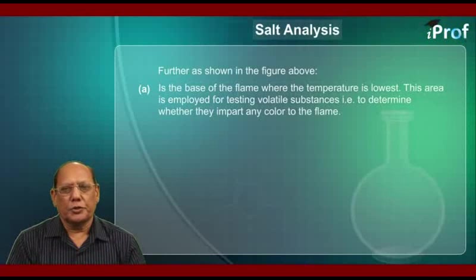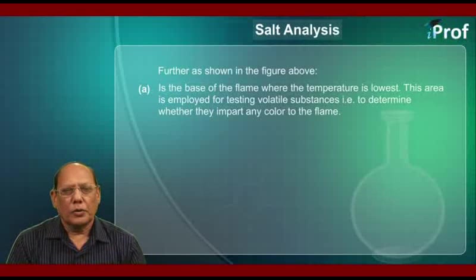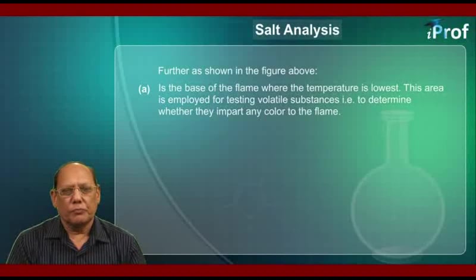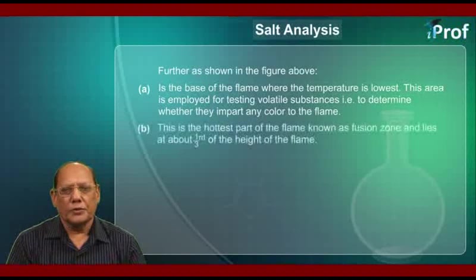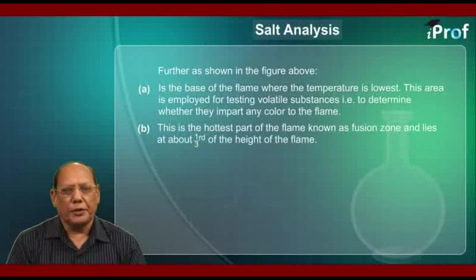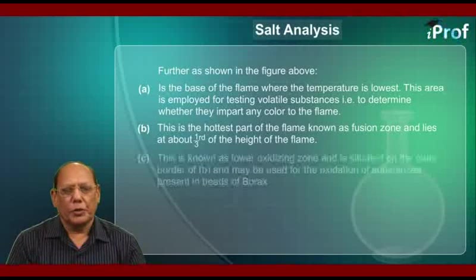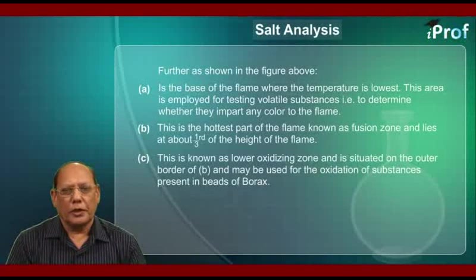As shown in the figure above, A is the base of the flame where the temperature is lowest. This area is employed for testing volatile substances — that is, to determine whether they impart any color to the flame. Point B is the hottest part of the flame, known as the fusion zone, and lies at about one third of the height of the flame.